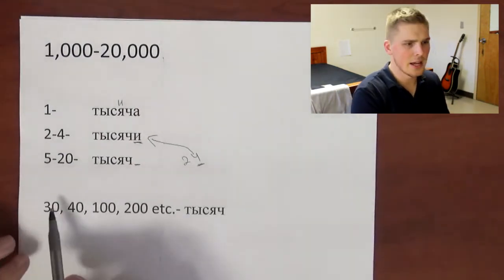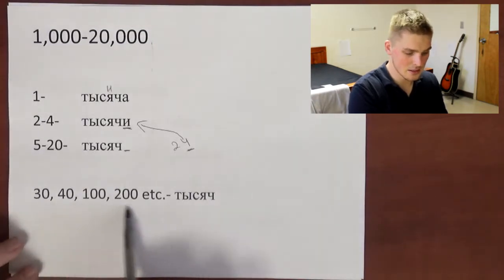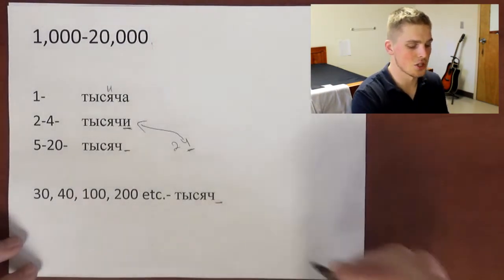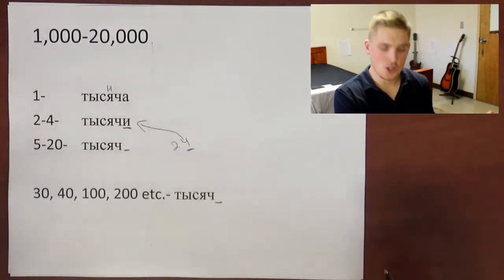But then if it ends on zeros like in this line right here, then it's always going to be тысяч. 40, 50, 60, 70 - тысяч.